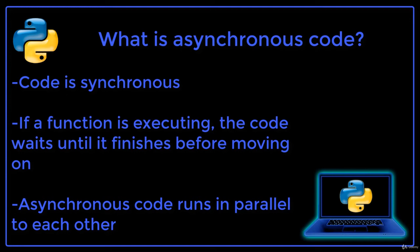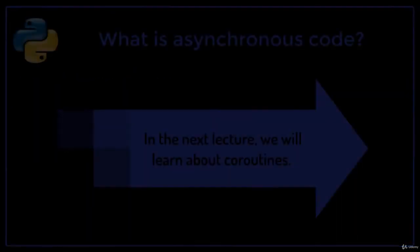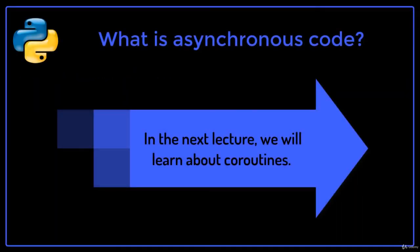In a computer program, code is executed line by line. If a function is executing, the program will wait until that function call finishes executing to go to the next line. Asynchronous code runs simultaneously — it allows our code not to block other code that is running. In the next lecture, we will learn about coroutines.